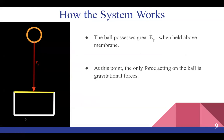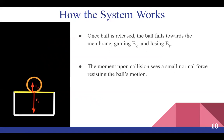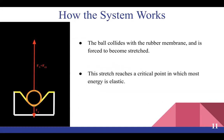How the system actually works: the ball possesses the greatest potential energy when it is held above the membrane at its peak height. At this point, the only force acting on the ball is gravitational force attracting it downwards. Gravity attracts the ball downwards, so the ball falls towards the membrane, gaining kinetic energy and losing potential energy as it is converted. The moment upon collision sees a small normal force resisting the ball's motion, and this can simply be stated because the ball doesn't fall through the membrane, but simply rests on it at this point.